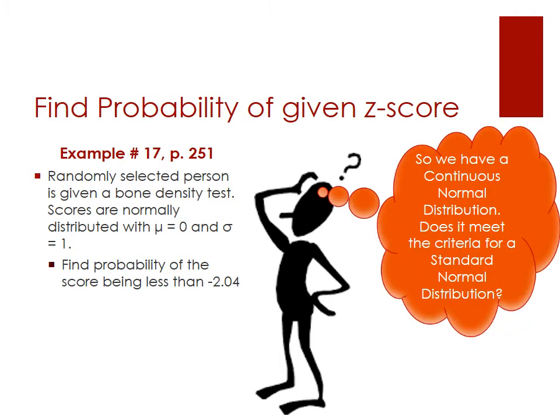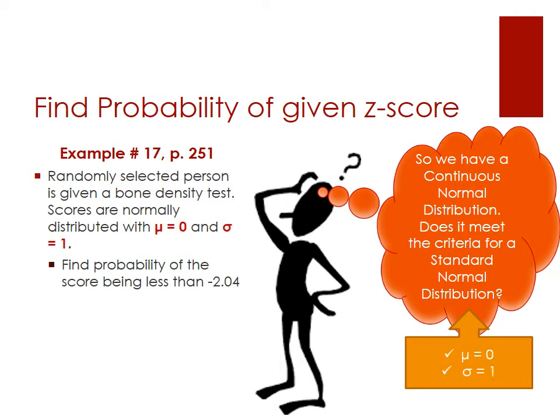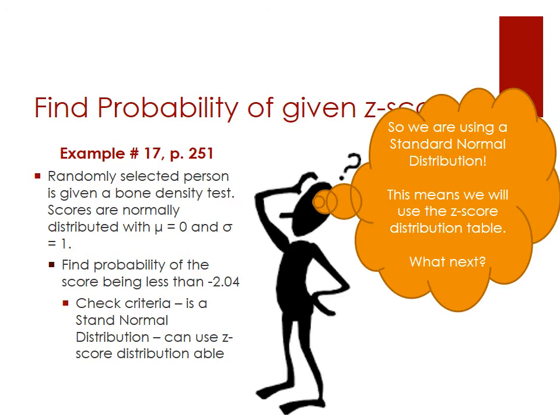Now we know we have a continuous normal distribution. The next thing we need to find out is whether or not we have a standard normal distribution — this is really important in terms of deciding which distribution table is the correct one to use. Checking our mean and standard deviation, we find our mean is zero and our standard deviation is one, which matches the criteria for a standard normal distribution. So we're going to be able to use the Z-score distribution table.